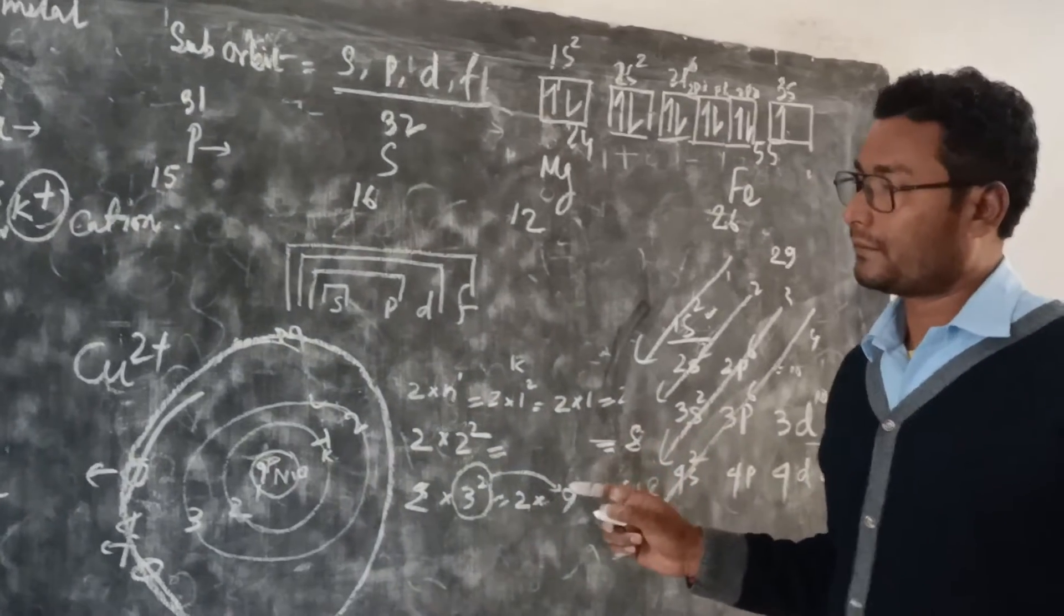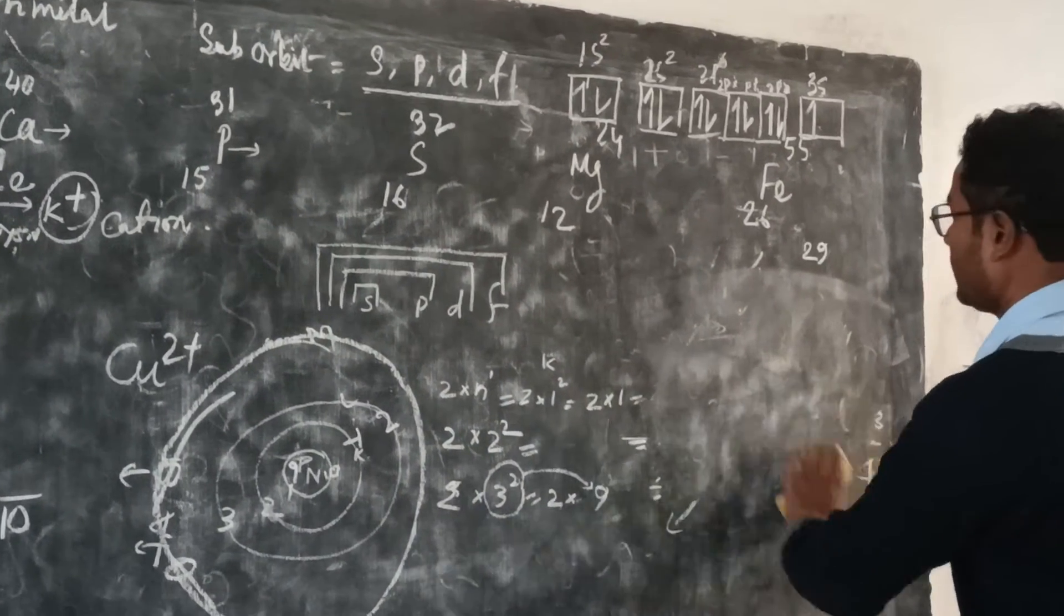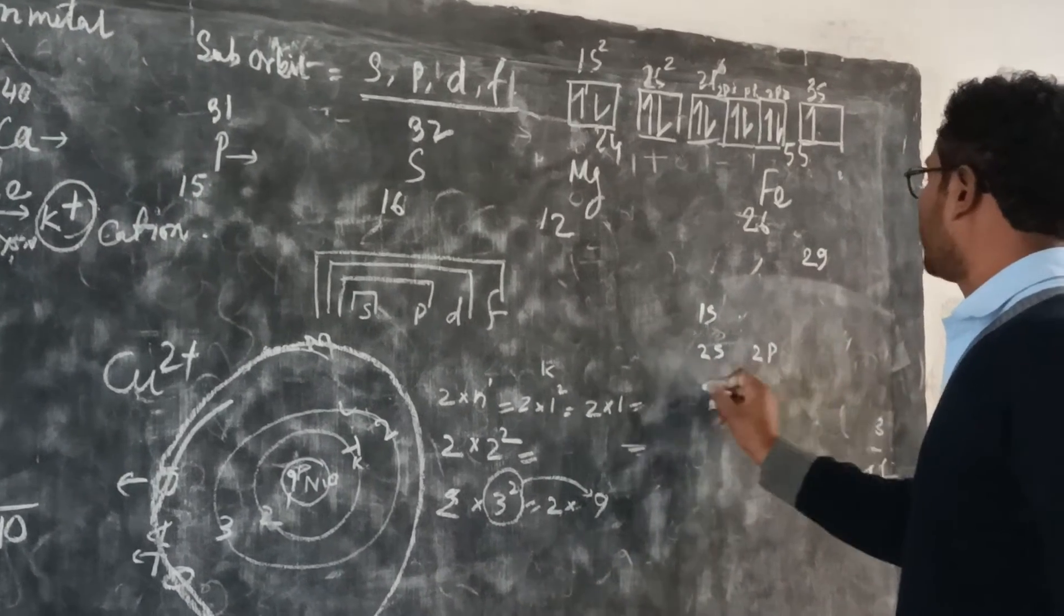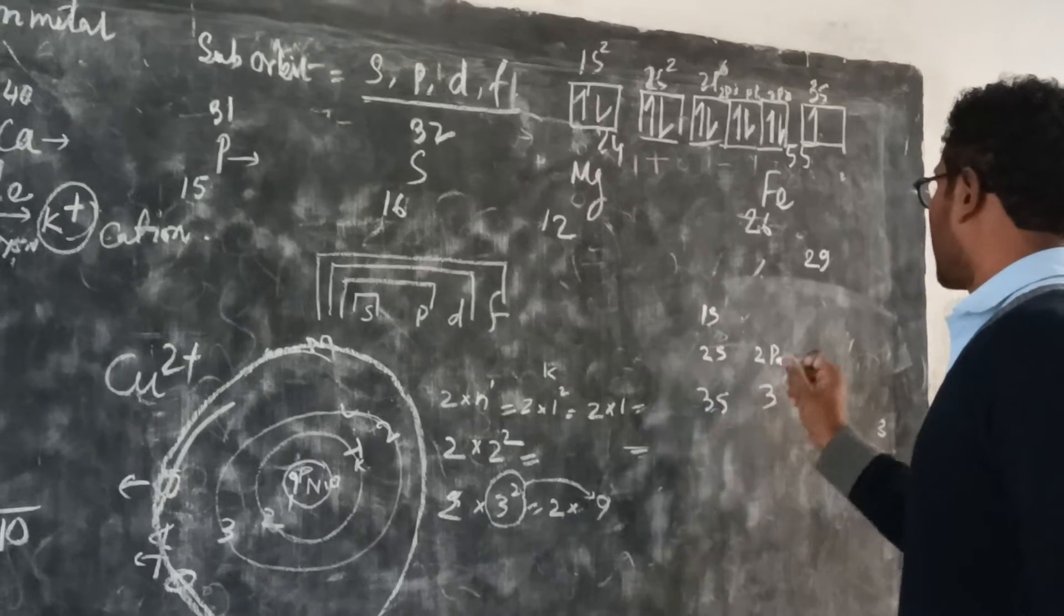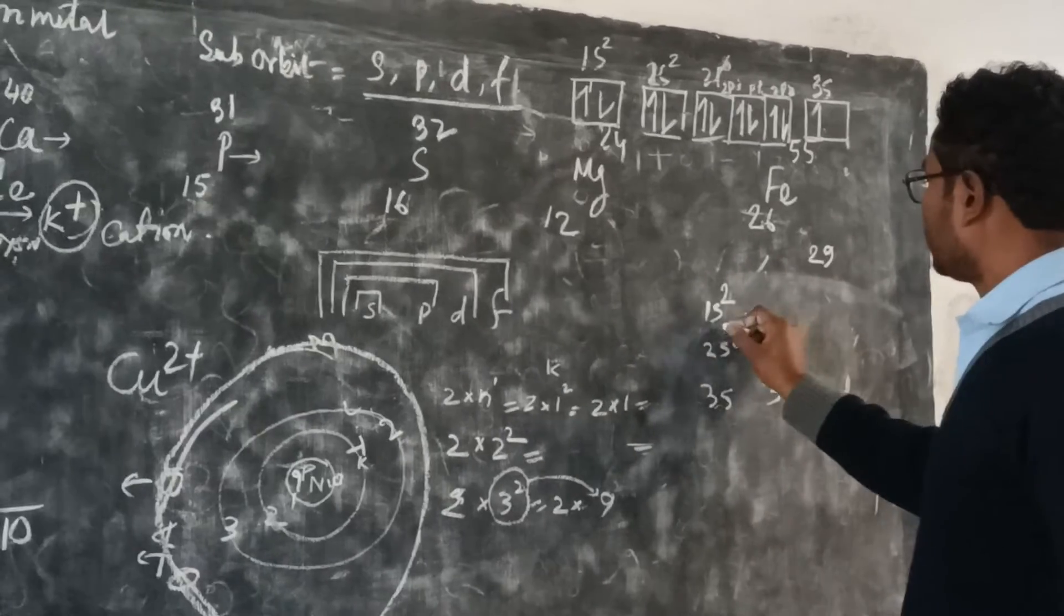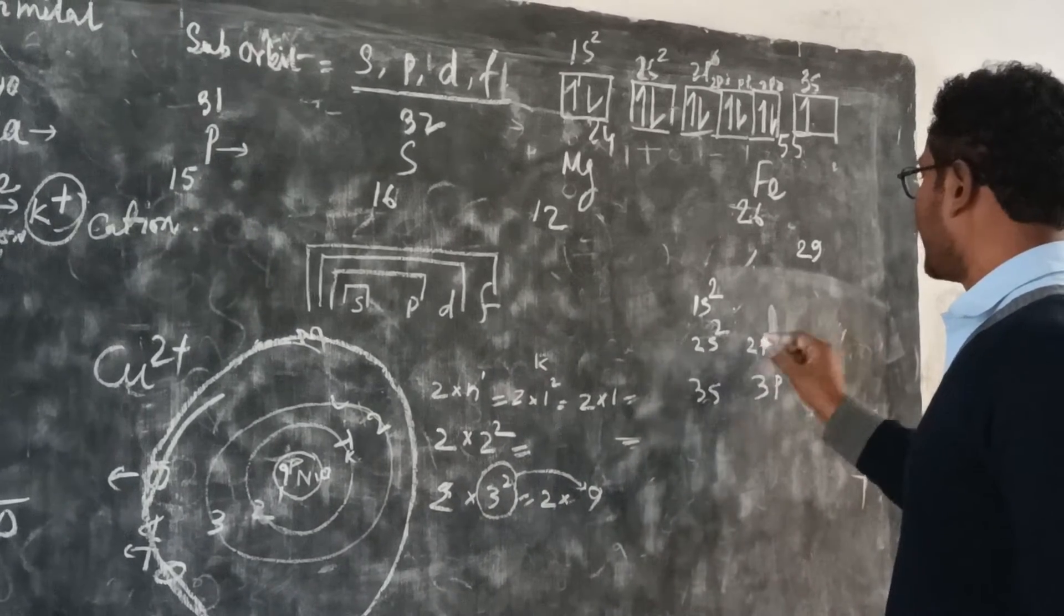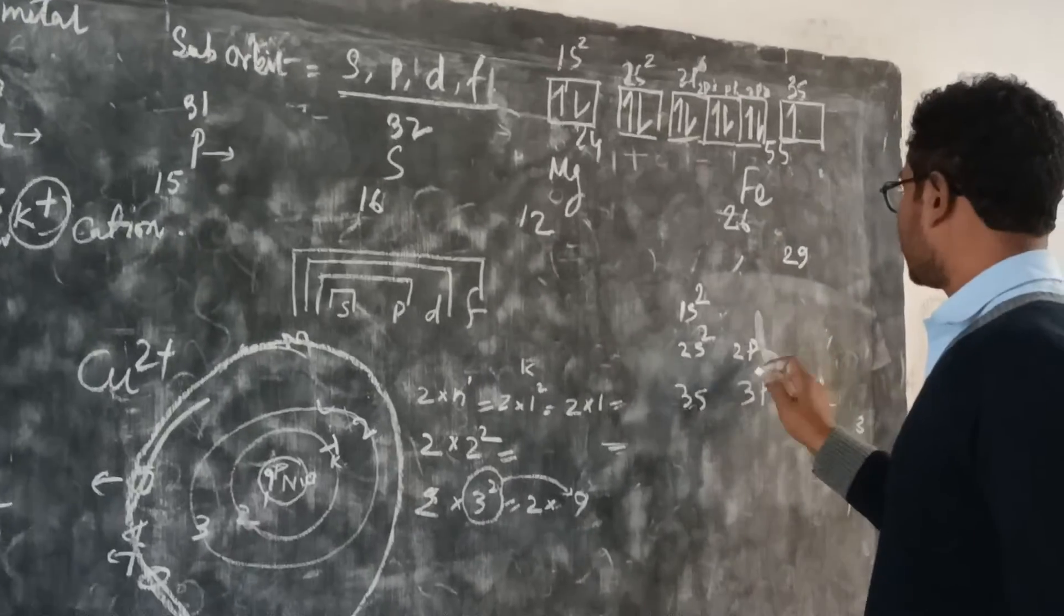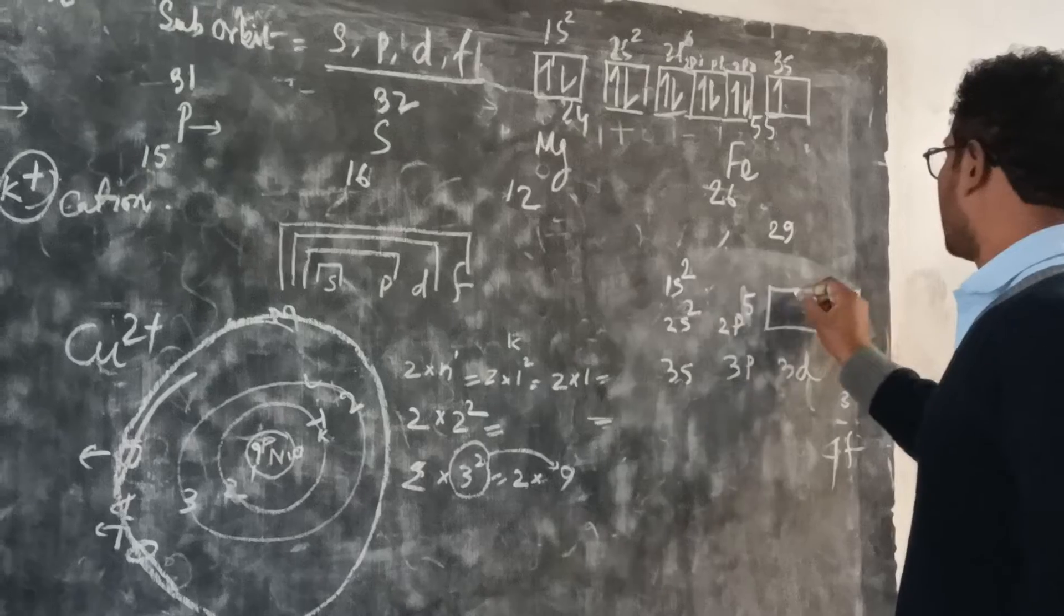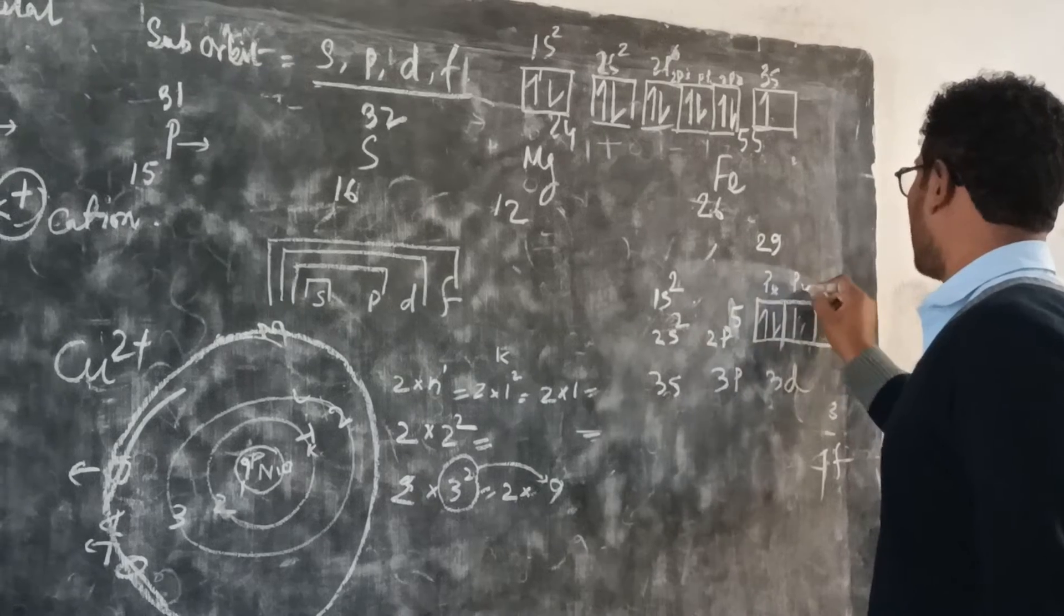If we fill the electrons in the orbitals, at the first orbit there will be 1s, then 2s, 2p, 3s, 3p, 3d. The p orbital has px, py, pz sub-orbitals.